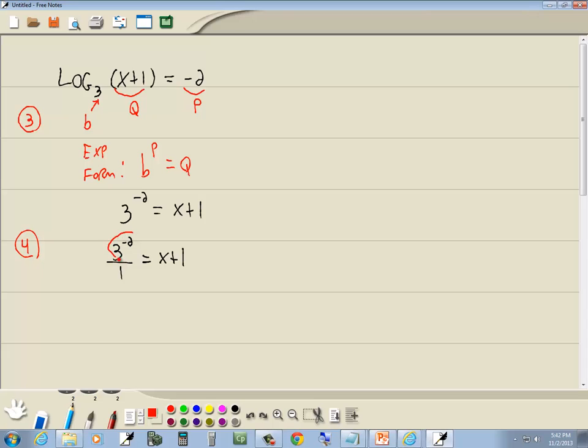Now we're going to take the part with the negative exponent opposite where it's at in a fraction. So I'm going to take it downstairs. Now when I do that, it becomes 3 to the positive 2. Whenever you move anything opposite where it's at in a fraction, the sign of the exponent changes. So 3 to the negative 2 becomes 3 to the positive 2.